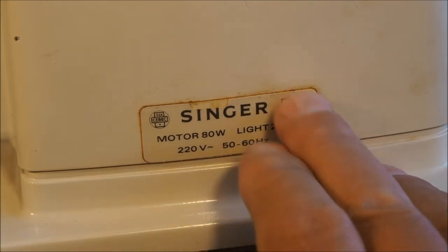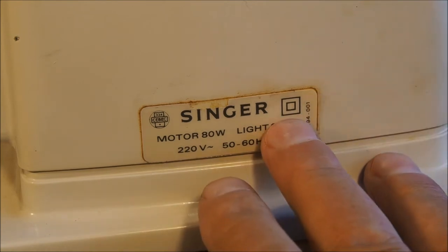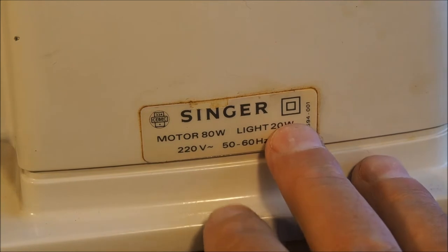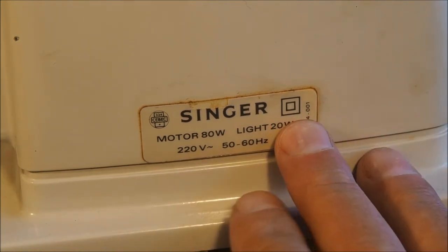This symbol here - the two squares, one inside the other - means the machine is double insulated. So you wouldn't earth this machine. If you're doing any electrical work or modifications, you don't earth them.